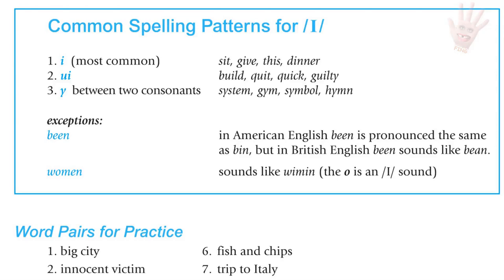Exceptions: In American English, the word 'been' as in 'how have you been' is pronounced with the I sound, but in British English it sounds like E — the same as the food 'beans.' Also, in the word 'women,' the O is pronounced as I.